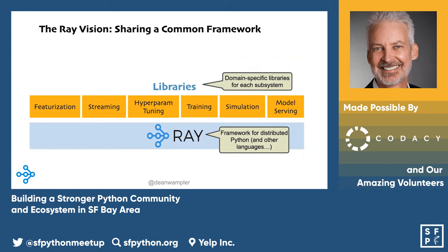That's really the theme of Ray — to make it as easy as possible with relatively few code changes to write applications in Python that can scale across a cluster pretty transparently. You can address a lot of the stages or areas of focus in modern machine learning: featurization and processing streams, hyperparameter tuning, training, simulation, and model serving. A lot of these, especially training and hyperparameter tuning, just require extraordinary compute these days.